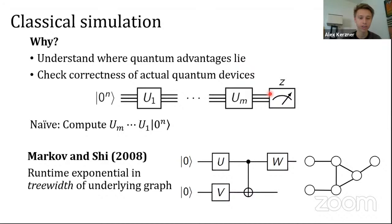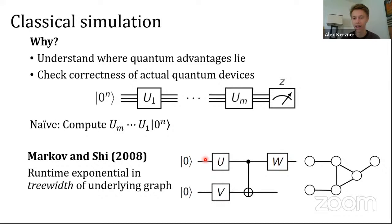The first improvement I want to introduce is a result of Markov and Xi. They say if you take your circuit and map it to a graph — replacing every gate and every input qubit with a vertex, and every portion of a wire with an edge between those two vertices — then they give a simulation algorithm that depends on the tree width of the underlying graph. It's some kind of geometric property of the circuit, and this is a very general simulation algorithm with no assumptions about what the gates are.